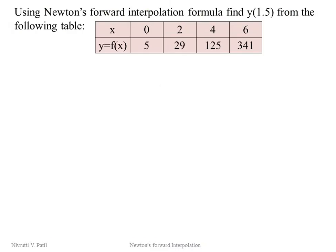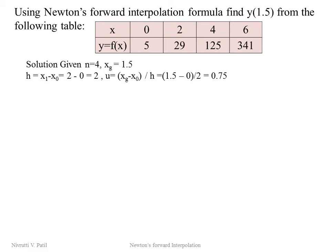Now let's solve a numerical example. The tabulated values are given and we have to find the value of y at xg = 1.5. The given data has n = 4 and xg = 1.5. The h value is x1 − x0 = 2, and u = (xg − x0) / h = 0.75.